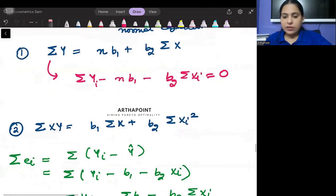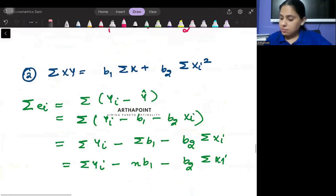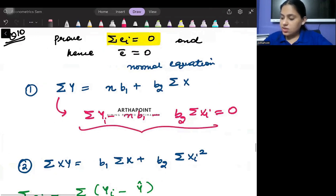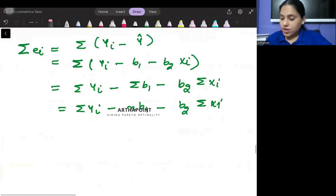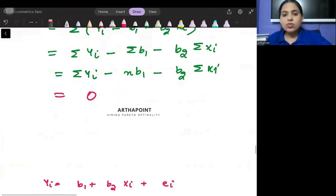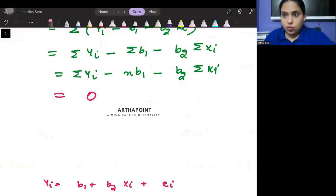And therefore if I just look back here, because this is just this thing only and this is equating to 0, so I can just go ahead and say that this will be equal to 0. So the sum of the error terms will be 0.